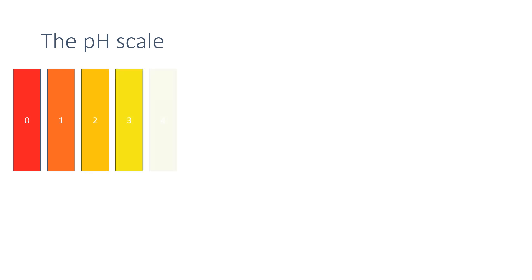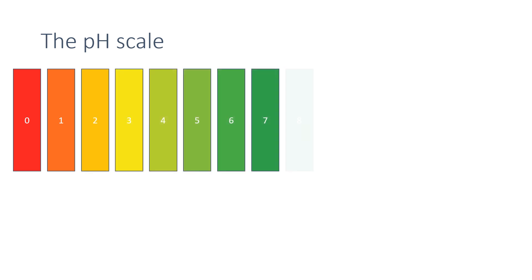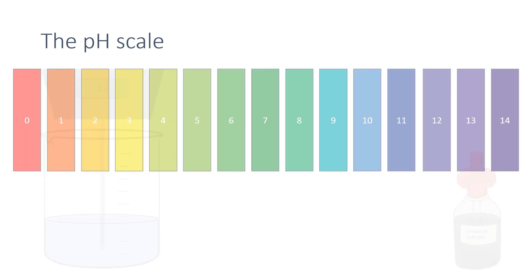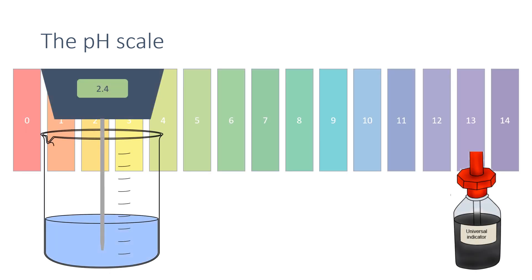The pH scale from 0 to 14 is a measure of the acidity or alkalinity of a solution and can be measured using universal indicator or a pH probe.